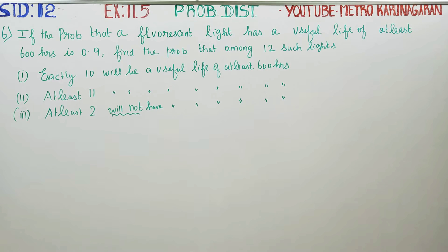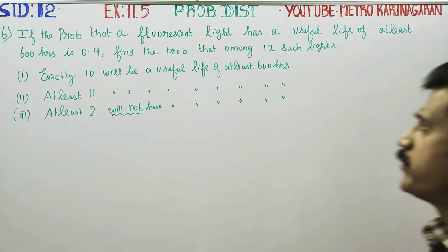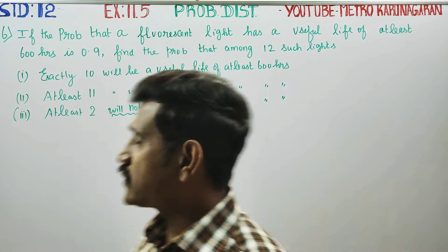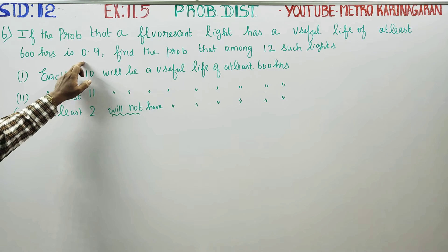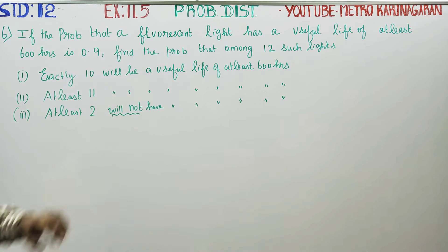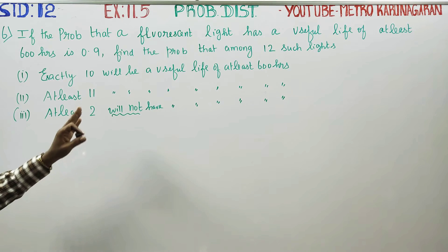Dear 12th standard students, in exercise number 11.5, question number 6: the probability that a fluorescent light has a useful life of at least 600 hours is 0.9. Find the probability among 12 such lights that exactly 10 or exactly 11 will have a useful life.